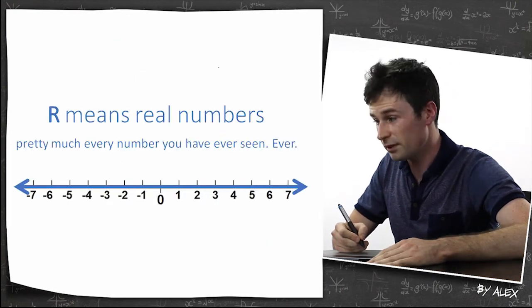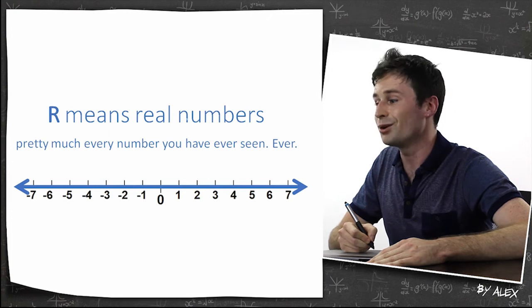R means real numbers, which is pretty much every number you've ever seen. Anything along this number line, pretty much.